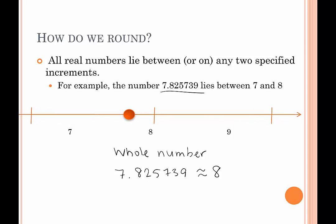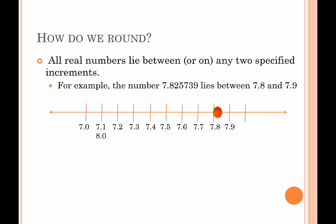What if we want to get more specific than the whole? That takes us to the tenths place. If we look at the tenths, 7.825739 — here are all the tenths between 7 and 8. We see that it's in between 7.8 and 7.9. Based on its location on the number line, it's closer to 7.8. So if we were rounding this number to the nearest tenth, it's closest to 7.8. Therefore, 7.825739 is approximately 7.8.